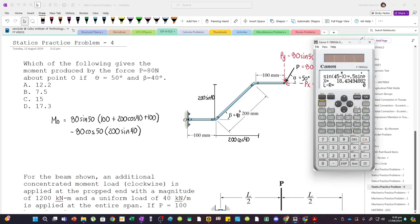So we input: 80 sine 50 times 100 plus 200 cos 40 plus 100, and then minus 80 cos 50 multiplied by 200 sine 40.